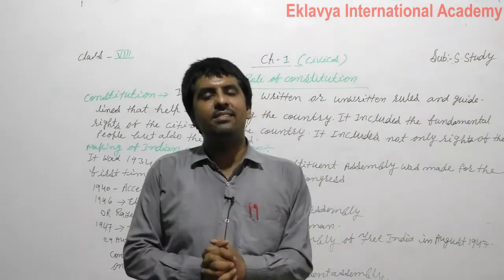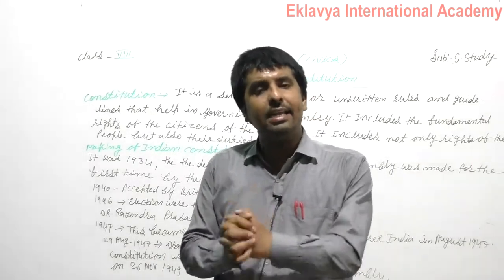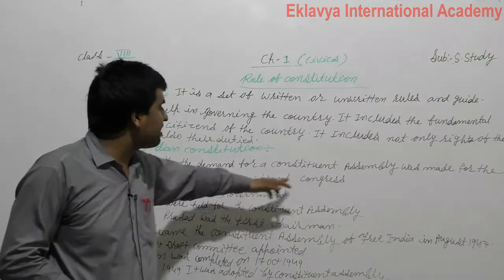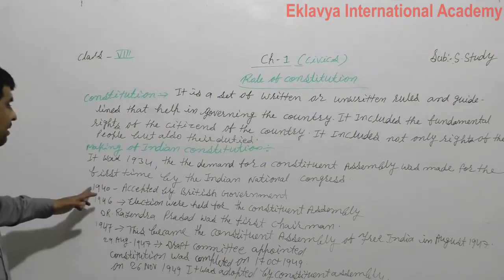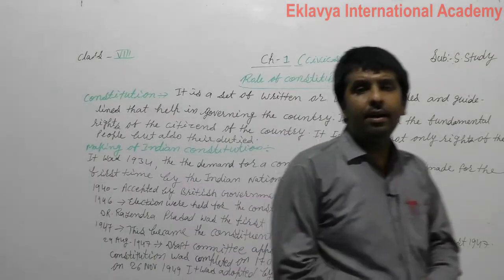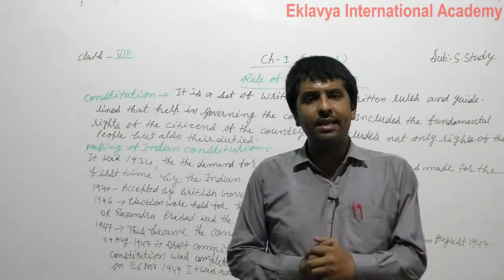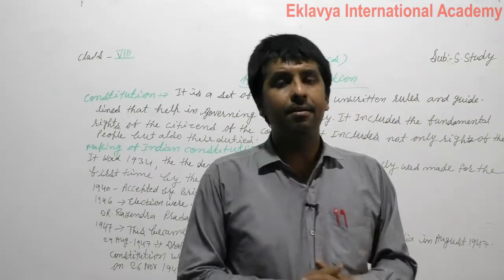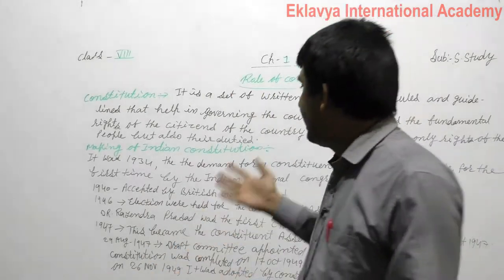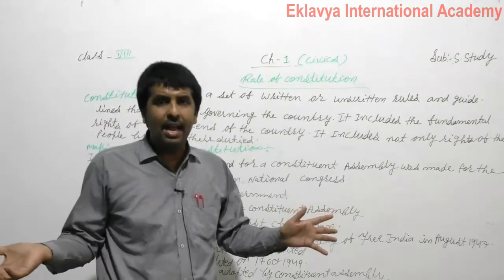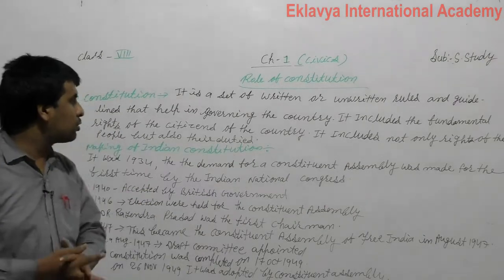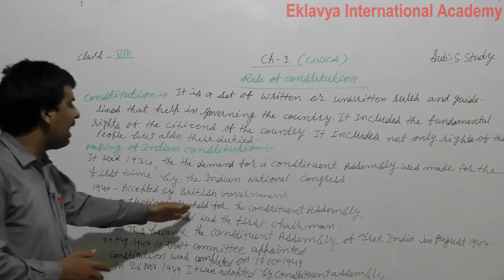The Indian National Congress was established in 1885. This organization demanded a constituent assembly. In 1940, the demand was accepted by the British government, as important leaders working in India demanded a constituent assembly. The British government decided and accepted the constituent assembly in 1940, and in 1946 elections were held for the constituent assembly.